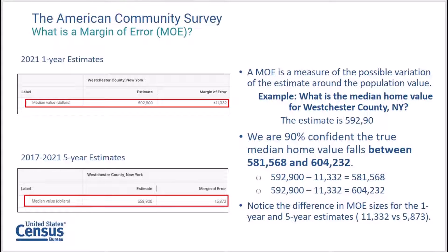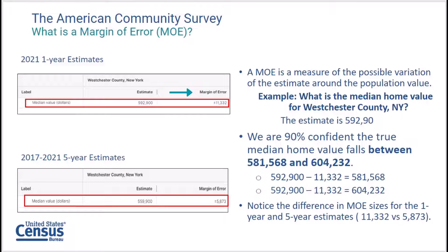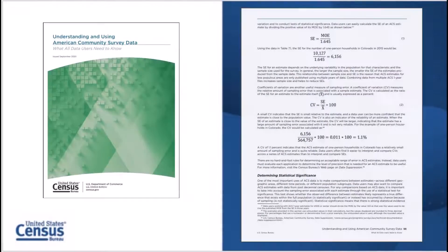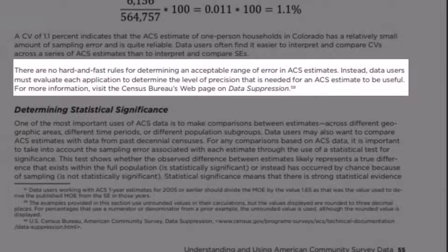We are often asked how to tell if an estimate is accurate or not. To help users, the Census Bureau provides a margin of error for each published ACS estimate. The margin of error, combined with the ACS estimate, gives users a range of values within which the actual real-world value is likely to fall — this is called the confidence interval. As our handbook explains, there are no hard and fast rules for determining an acceptable range of error in ACS estimates. Instead, data users must evaluate each application to determine the level of precision that is needed for an ACS estimate to be useful.